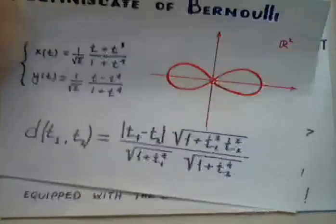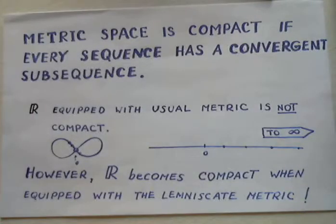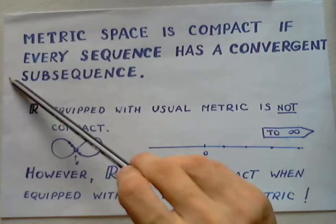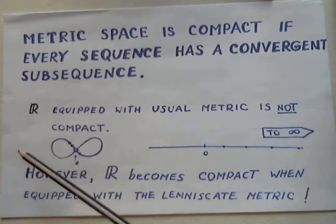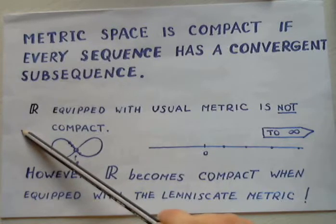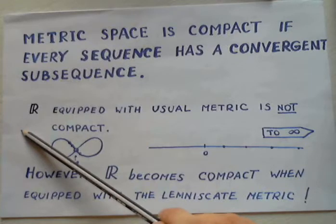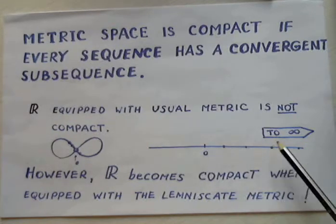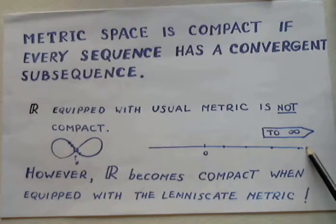Recall that metric space is compact if every sequence has a convergent subsequence. R equipped with the usual metric is not compact. That's because, as a rule, we can't extract convergent subsequence from the sequence that blows up to infinity. However, R becomes compact when equipped with the Lemniscate metric.